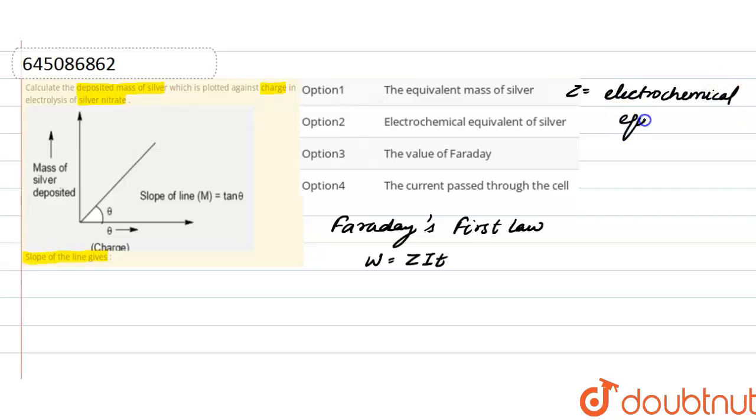I is the current, T is the time required. Or here we can write this as: weight deposited equals Z into Q, where Q is the charge, which equals current into time.